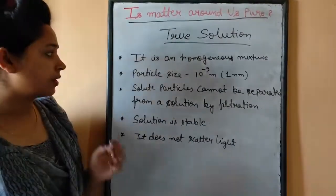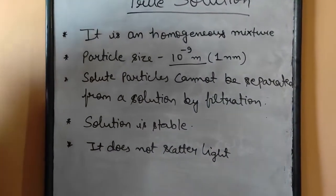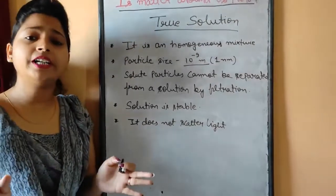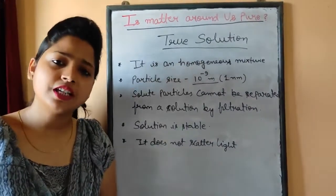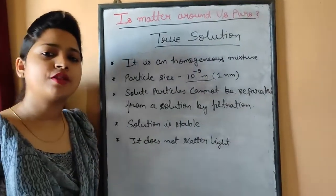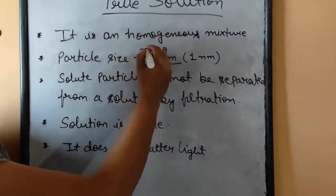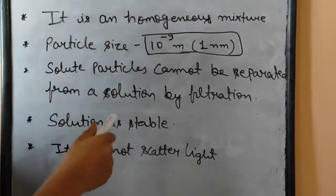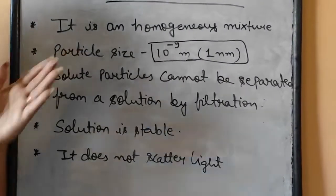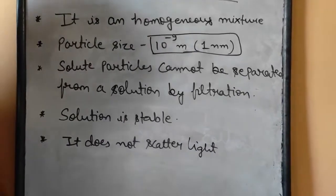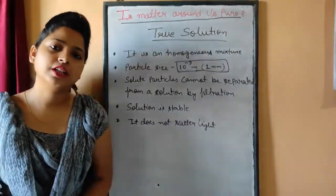True solution is a homogeneous mixture in which the particle size is 10 to the power minus 9 meter. Particle size is the basic criteria to divide solutions into different types. The particle size of true solution is 10 to the power minus 9 meter, which is equivalent to 1 nanometer. This is a very important point — you must remember it.